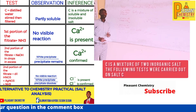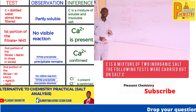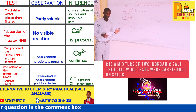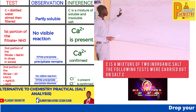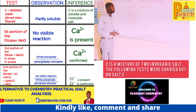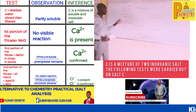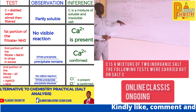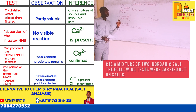Good day viewers. Today we want to consider the alternative to chemistry practical, which is salt analysis. C is a mixture of two inorganic salts. This alternative to practical — you are not given any reagent; you are not in the real lab. But the test, observation, and inference table is already prepared. These are what you will see in your exam, and these are the expected answers you have to supply.